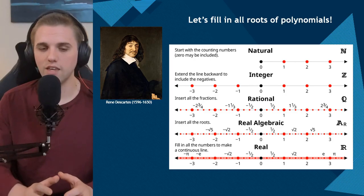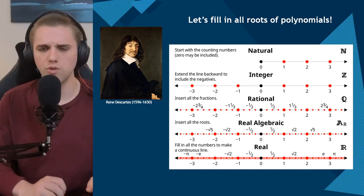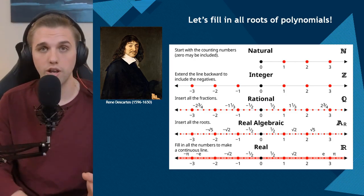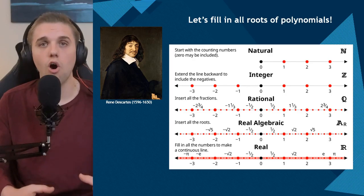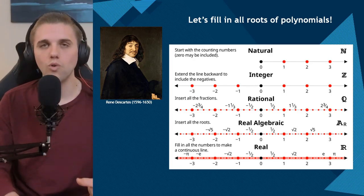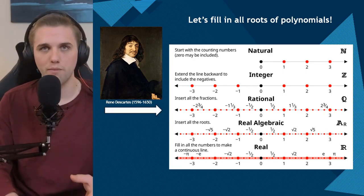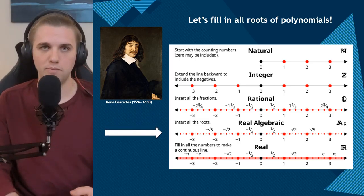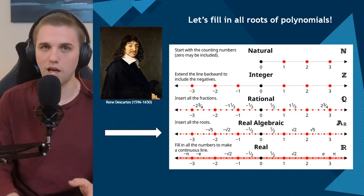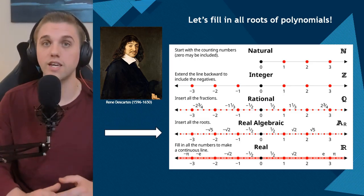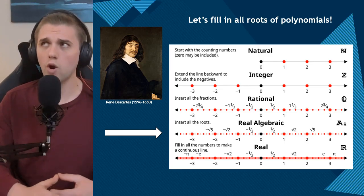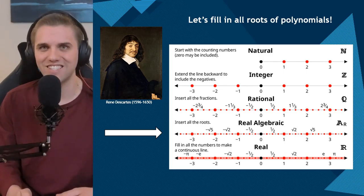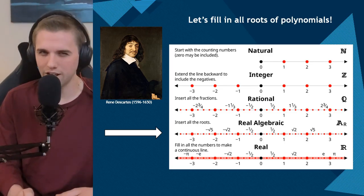What's interesting is if you take the square root of two, square root of five, cube root of three, and so on — if you take all of the roots — you only fill the number line partially. But you don't completely fill the number line so that it's continuous. So how do we do that, and is that next step natural?